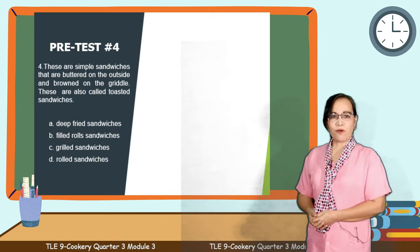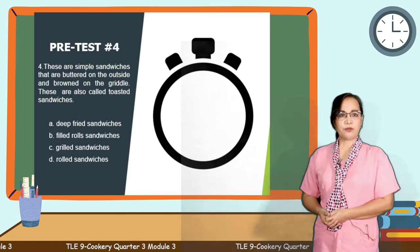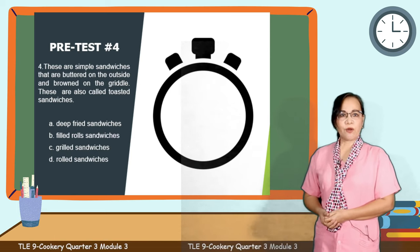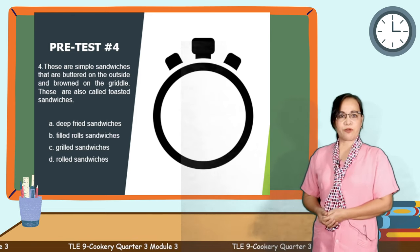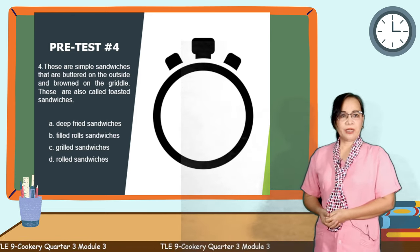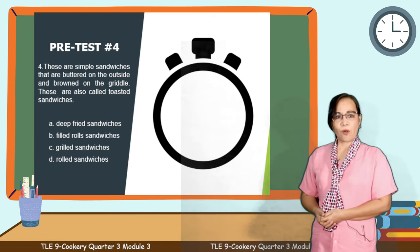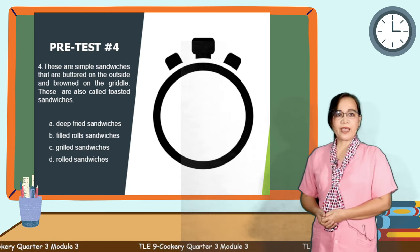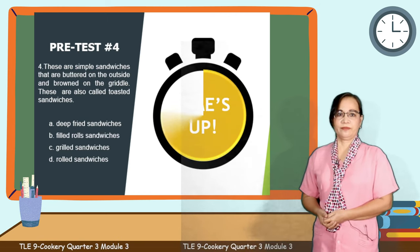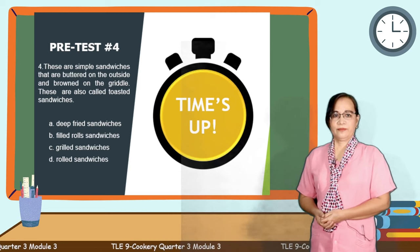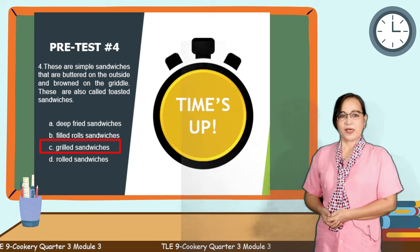Question number 4: These are simple sandwiches that are battered on the outside and browned on the griddle. These are also called toasted sandwiches. Is it letter A, deep-fried sandwiches? Letter B, filled roll sandwiches? C, grilled sandwiches? Or letter D, rolled sandwiches? Comment your answer in 5 seconds. Time's up! Well done, learners! It's letter C, grilled sandwiches.